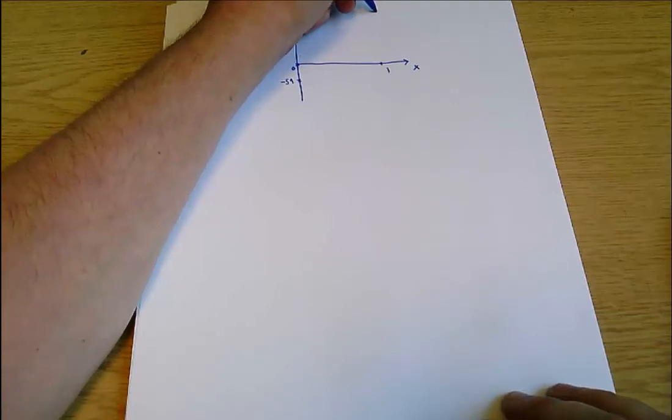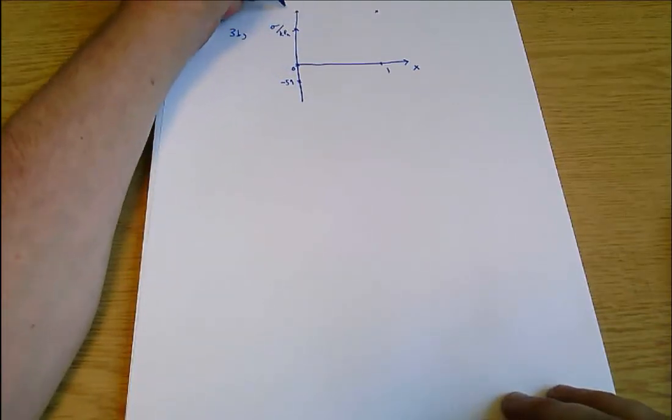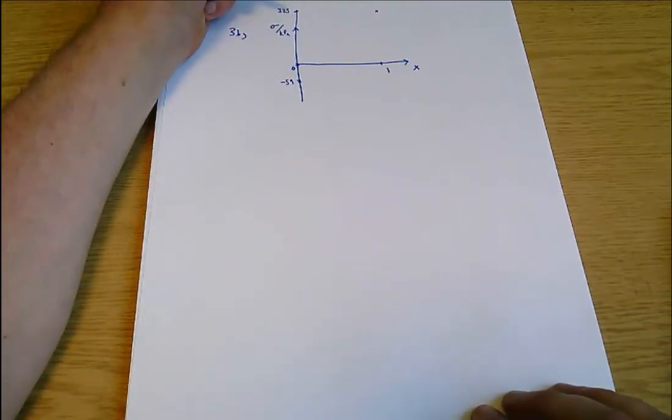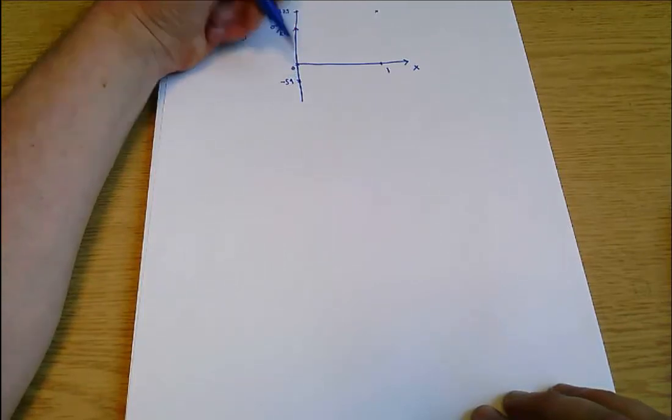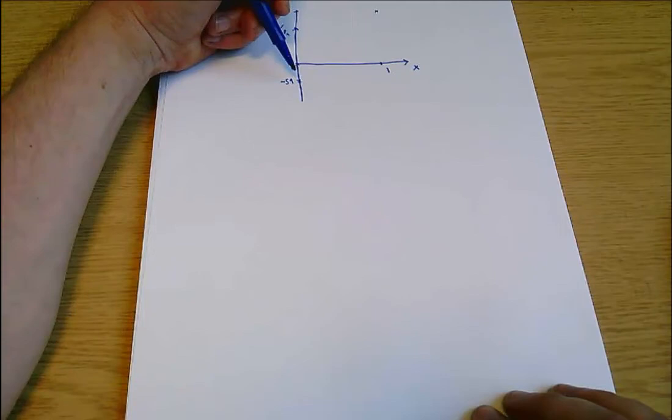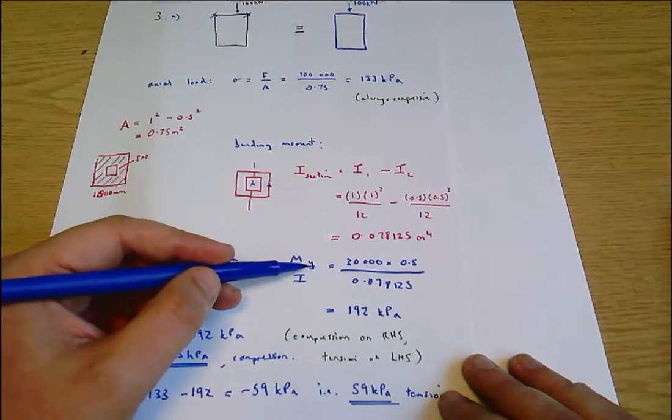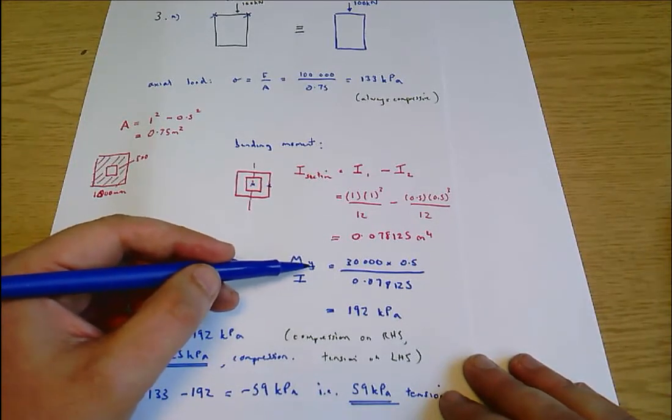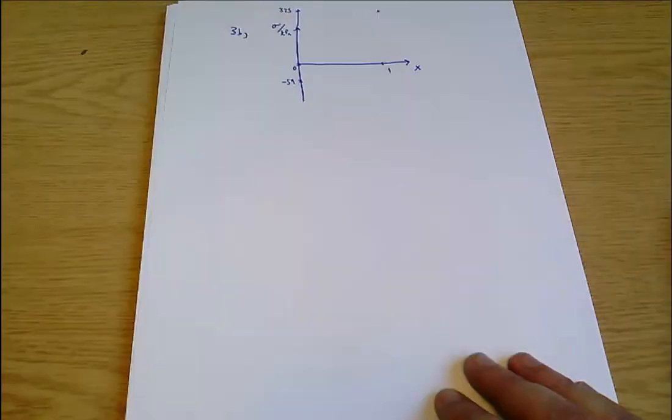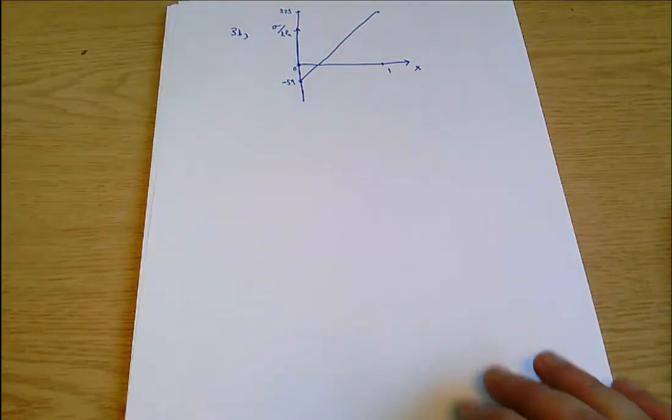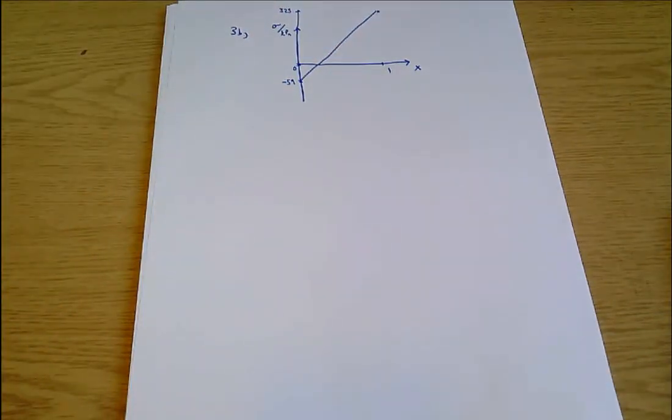And we know that the value is minus 59 kPa on the right hand side and plus 325 - I haven't really drawn out my axes very well here, you'll forgive me. So minus 59 on the left hand side where tension and compression act against each other, plus 325 on the right hand side. And the other thing that you know from this equation here is that stress is a linear function of y - it's just some number times y, the distance from the neutral axis. And so a linear function means it looks like a straight line on the graph. So that is the graph of stress in the column as a function of distance from the left hand edge.